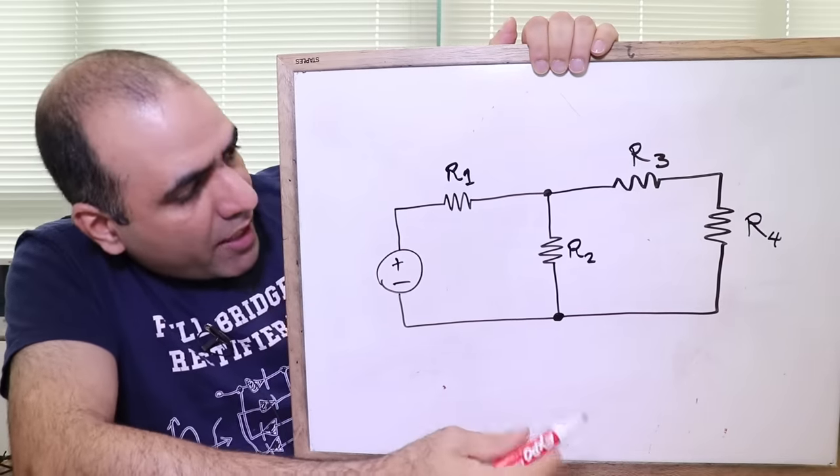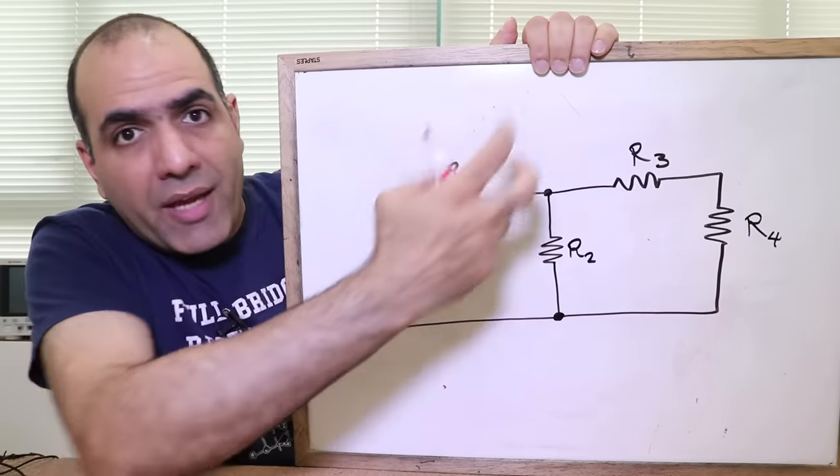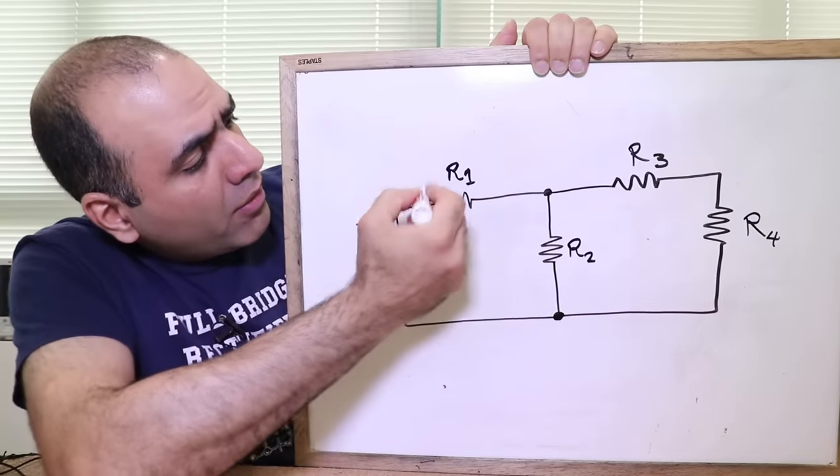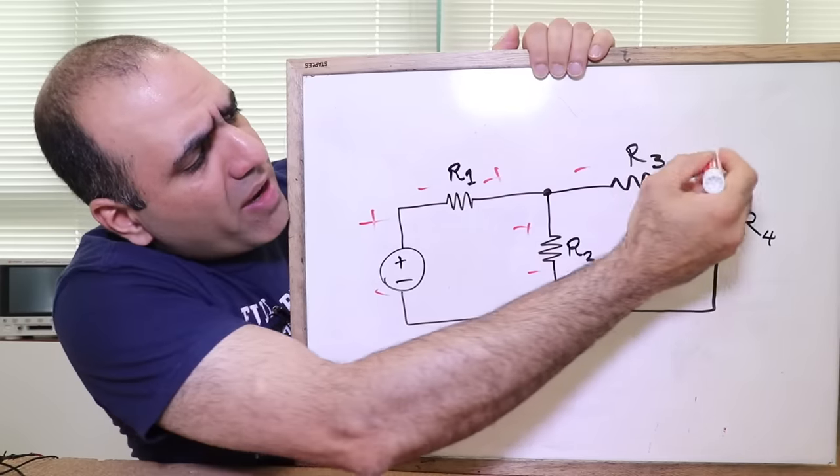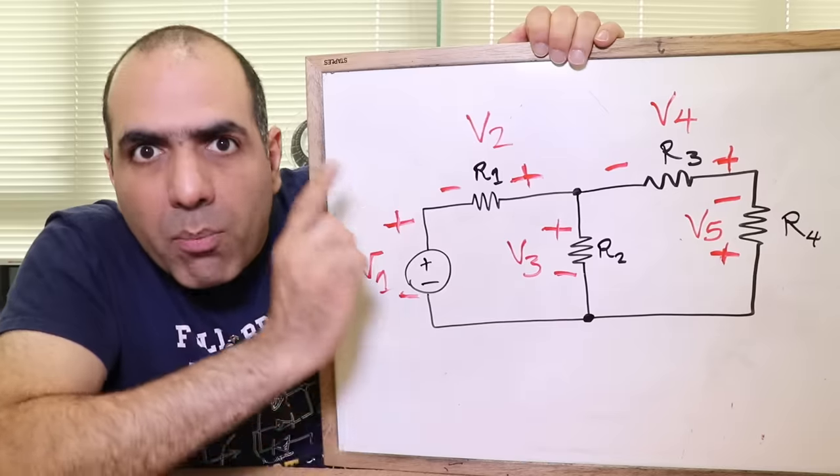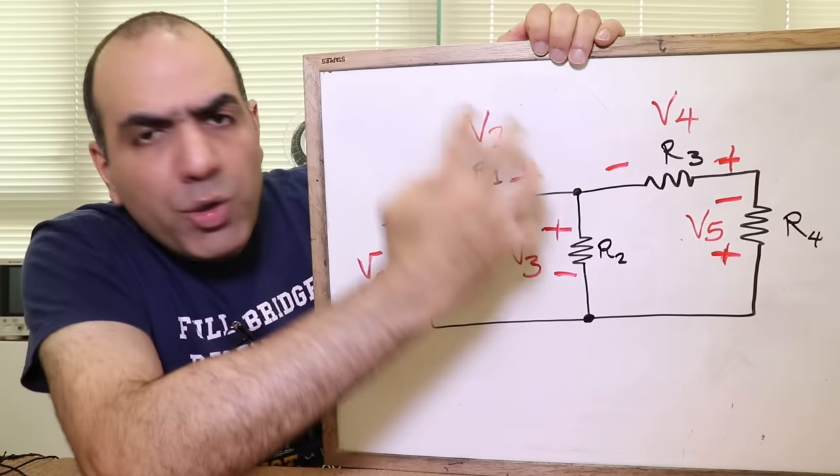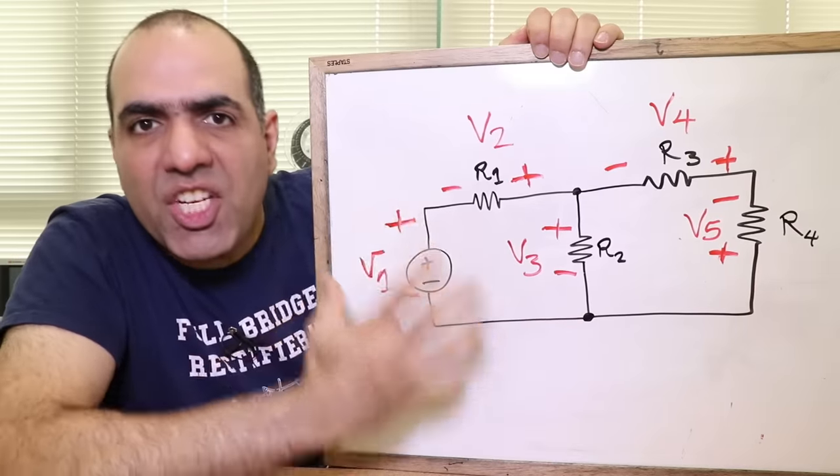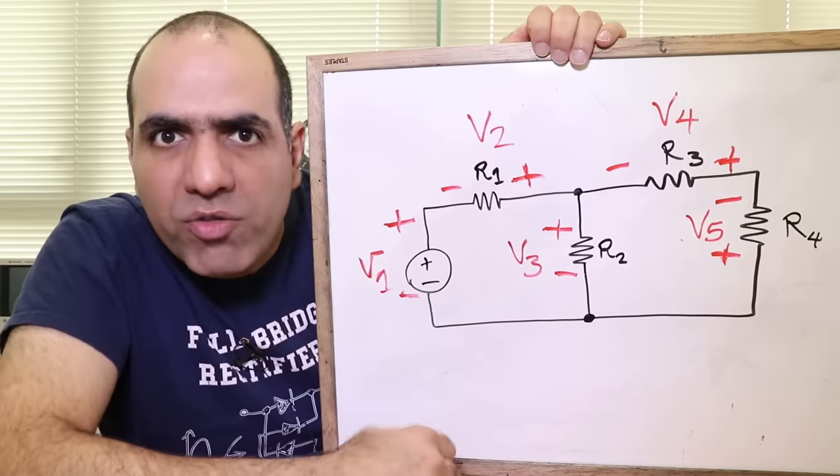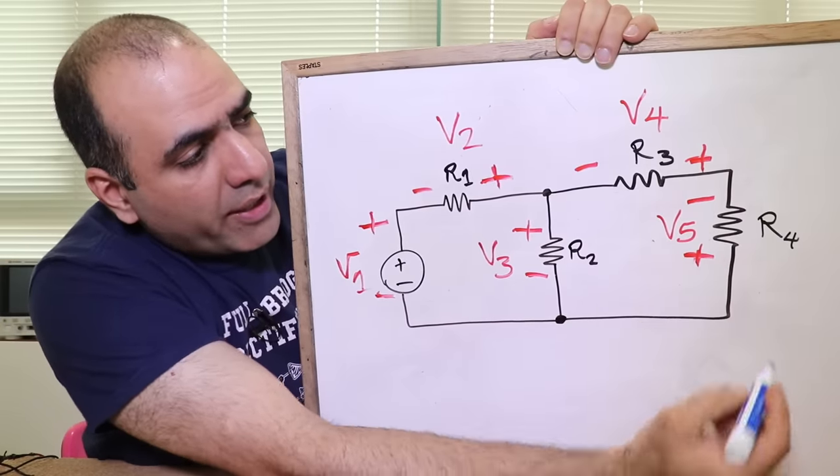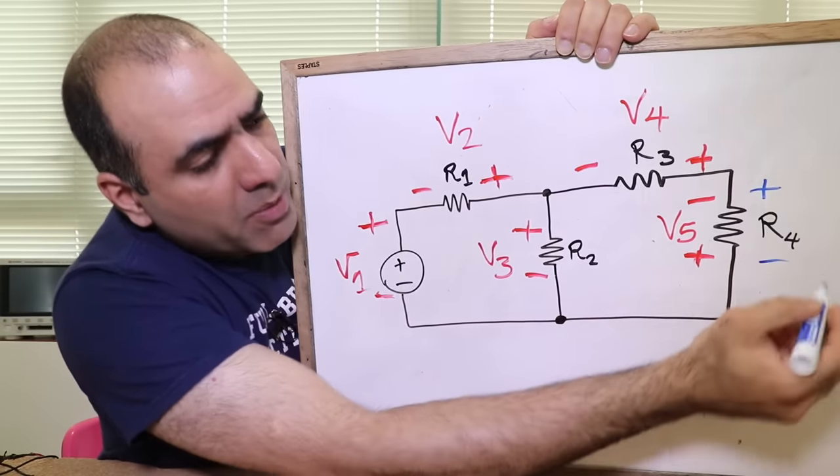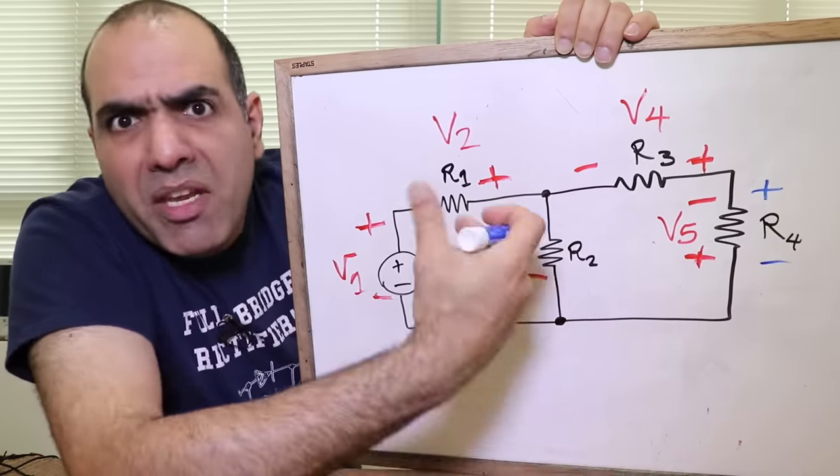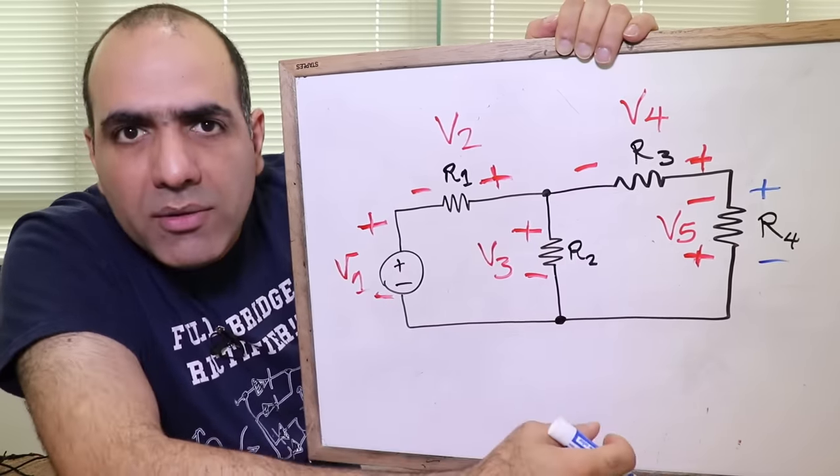Imagine we have a circuit like this. And I don't know the polarity of voltages across components, but I want to know their relations. First, I assign polarities across the components any way I like. One important thing you should remember is that it doesn't matter how you assign your polarities, as long as you stick with them forever. You can't change them halfway or you'll have to start over. For example, if you assign your voltage like this, but the actual voltage is positive this way, it doesn't matter. The value you get for your voltage assignment will be negative, which is absolutely fine, so don't worry about it.